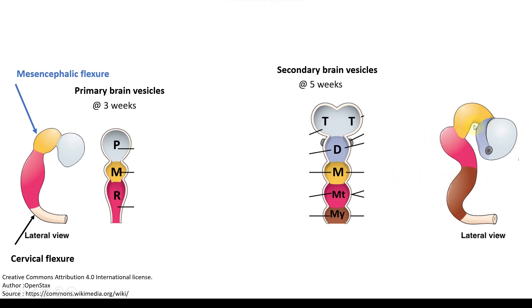Now let us look at how the prosencephalon differentiates into its two parts. You have a midline diencephalon and the enlarging telencephalic vesicle. You are seeing the right telencephalic vesicle; there is a left one on the other side. These two become so enormous that they sandwich the diencephalon between them.